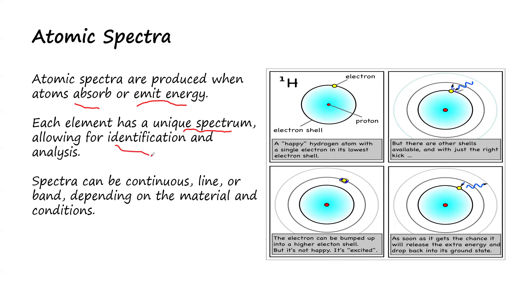Atomic spectra is a technique in chemistry and biochemistry that is used in identification of an element based on their unique spectra. The spectra produced by the atom can be continuous spectra, line spectra, or band spectra, but it depends on the material and the conditions.